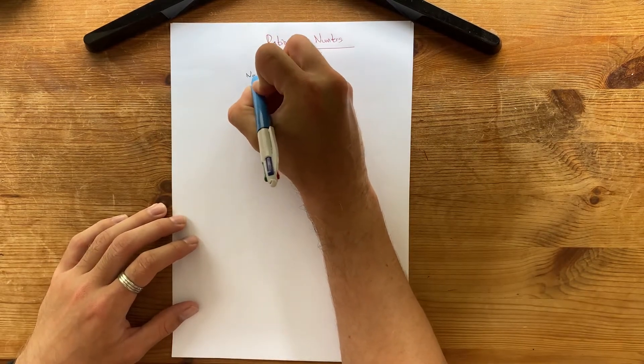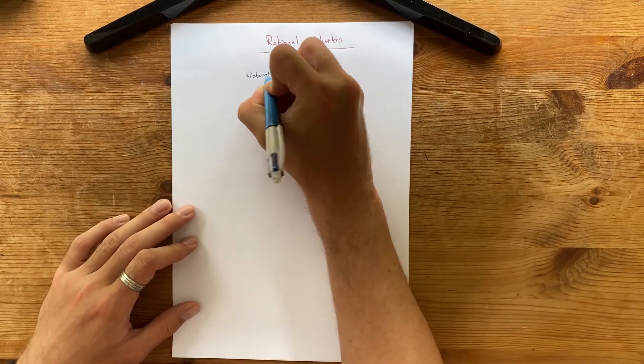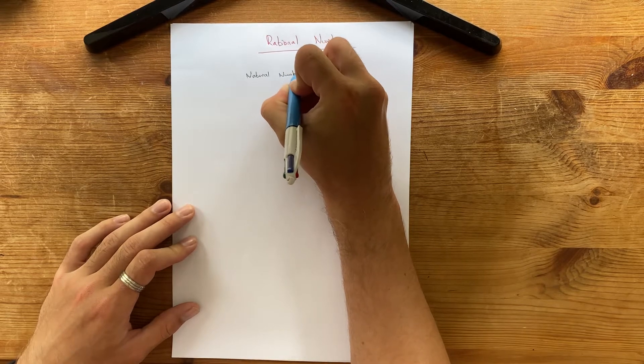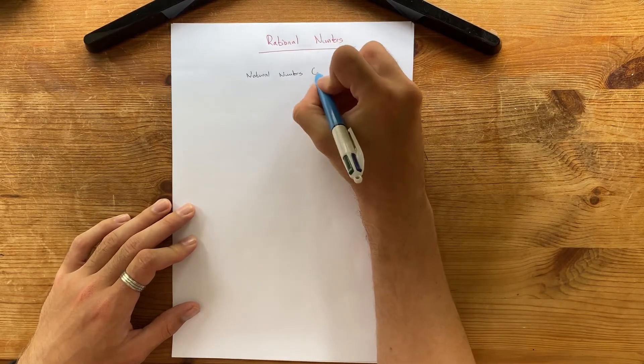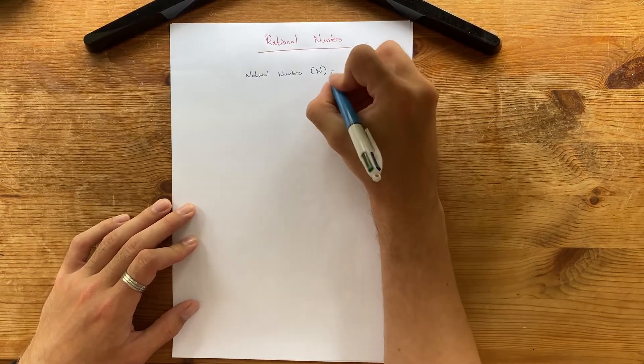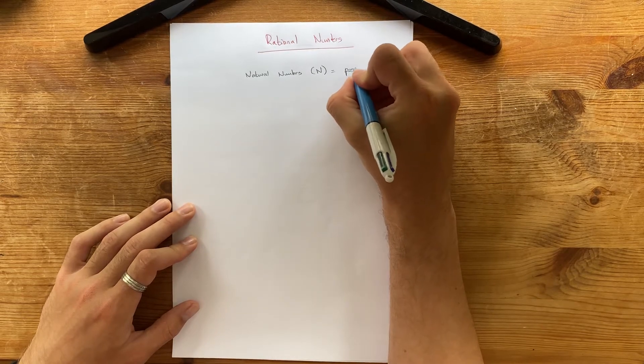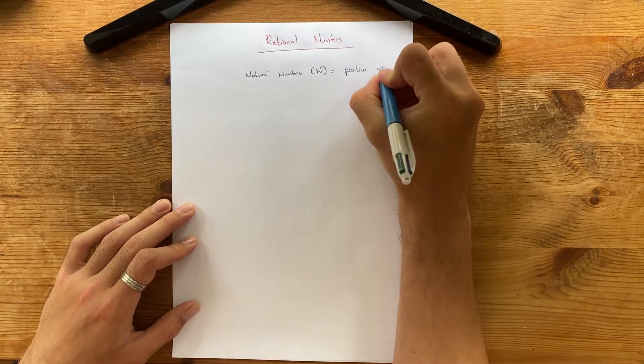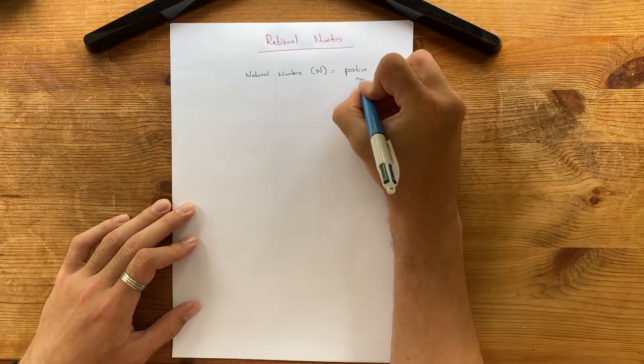The first ones we looked at were the natural numbers. And these were represented by the letter N. And these were positive whole numbers.